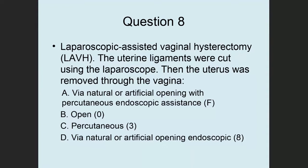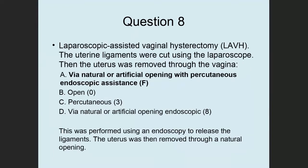Question 8: Laparoscopic assisted vaginal hysterectomy (LAVH) — the uterine ligaments were cut using the laparoscope and the uterus was removed through the vagina. Which approach is it? Via natural or artificial opening with percutaneous endoscopic assistance, open, percutaneous, or via natural or artificial opening endoscopic? This is via natural or artificial opening with percutaneous endoscopic assistance — value F. The laparoscope was used to release the ligaments, and then the uterus was removed through a natural opening, the vagina.